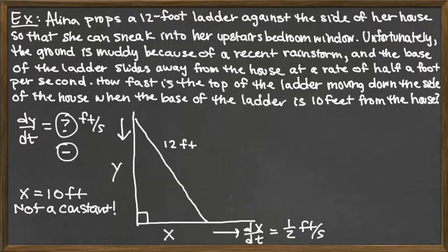The very end of this gives us our final piece of information. It says when the base of the ladder is 10 feet from the house. So it's saying at the snapshot time when x is equal to 10 feet. Now this x equals 10 feet is not a constant. And that's really important because you cannot plug that in before taking the derivative, or else you're not going to have any x's, and therefore you're not going to have any dx/dt's.